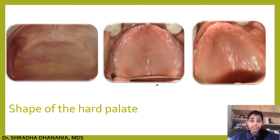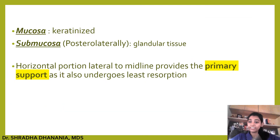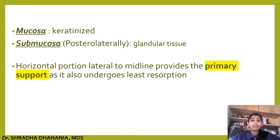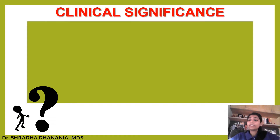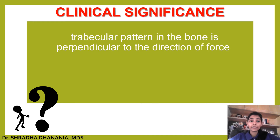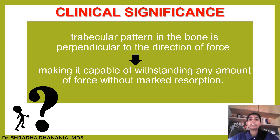The shape of the hard palate affects the retention and stability of the denture. Histologically, the hard palate is covered with keratinized mucosa, and the submucosa in the posterior lateral part contains glandular tissue. The horizontal portion lateral to the midline provides primary support because it undergoes the least resorption. The hard palate is divided into anterior and posterior: the posterior part acts as the primary stress-bearing area, and the anterior one-third acts as the secondary stress-bearing area. Clinically, the trabecular pattern of bone in the posterior lateral slopes is perpendicular to the direction of the force, making it capable of withstanding forces without marked resorption.